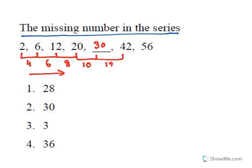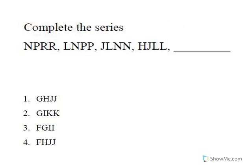After 30, the difference should be 12, so 30 plus 12 is 42. The next difference is 14, so 42 plus 14 is 56. The series and the pattern everything fits, so the missing number must be 30. Missing number series are very easy — you just need to understand the pattern and how the numbers are progressing and what is the relation between them.